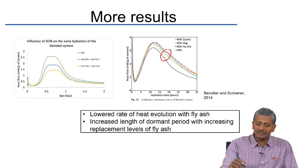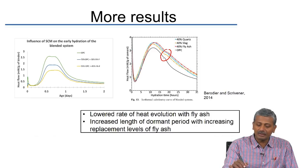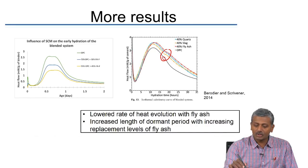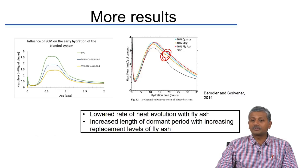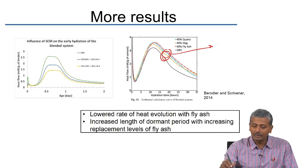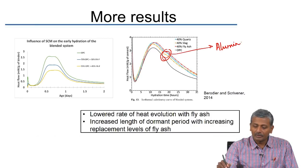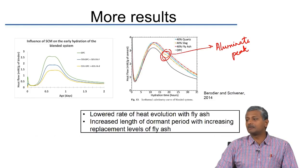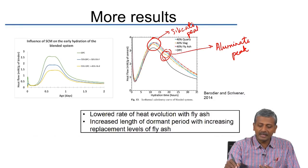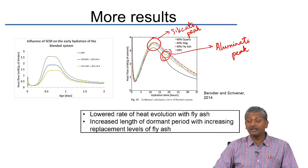The secondary peak seen as a hump in ordinary Portland cement (the black line) appears slightly larger when cement is replaced with blending materials like quartz, fly ash, and slag. That secondary peak is related to aluminates and is called the aluminate peak. The primary peak is called the silicate peak, and the secondary peak appearing after it is the aluminate peak.